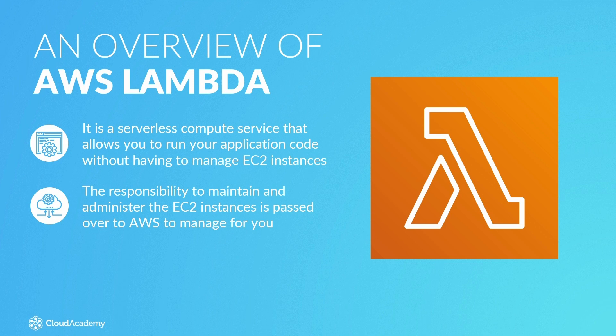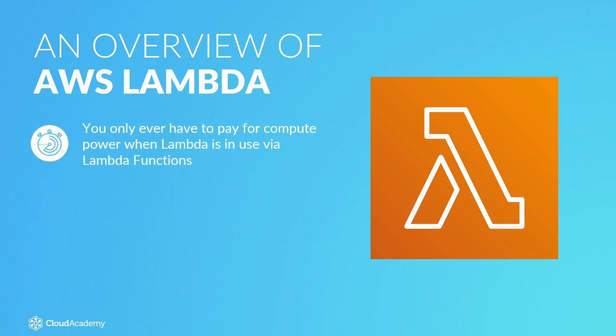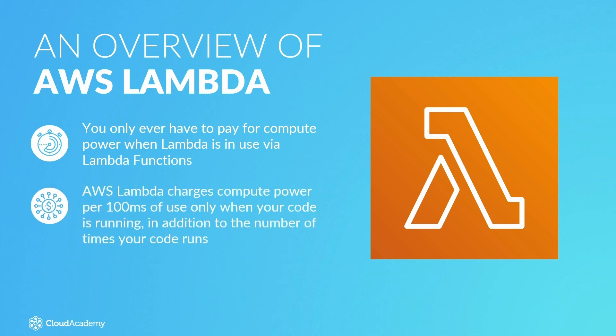With AWS Lambda, you only ever have to pay for the compute power when Lambda is in use via Lambda functions. AWS Lambda charges compute power per 100ms of use, only when your code is running, in addition to the number of times your code runs. With sub-second metering, AWS Lambda offers a truly cost-optimised solution for your serverless environment.